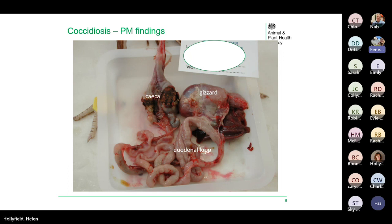This slide shows material from one of our post-mortems illustrating the anatomy of the gastrointestinal tract — the muscular gizzard, the duodenal loop with the pancreas in the middle, and the two blind-ending caeca. In this case there were haemorrhagic caecal cores, which is characteristic of Eimeria tenella.